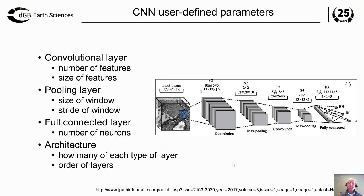When working with convolutional neural networks, the architecture becomes important and there are many parameters to tune. In the convolutional layer itself you can change input parameters, the number of features, and the size of features. You can add pooling layers to change the window size, play with the stride of the windows, and add fully connected layers. All these different layer types can be applied multiple times to build ever more complex neural networks.